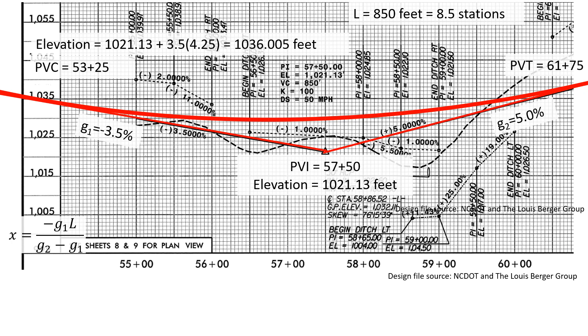Now we can start looking for the low point. X equals negative G1 times L over G2 minus G1. So we have minus negative 3.5 times 8.5 over 5 minus negative 3.5, which gives us an X of 3.5 stations.